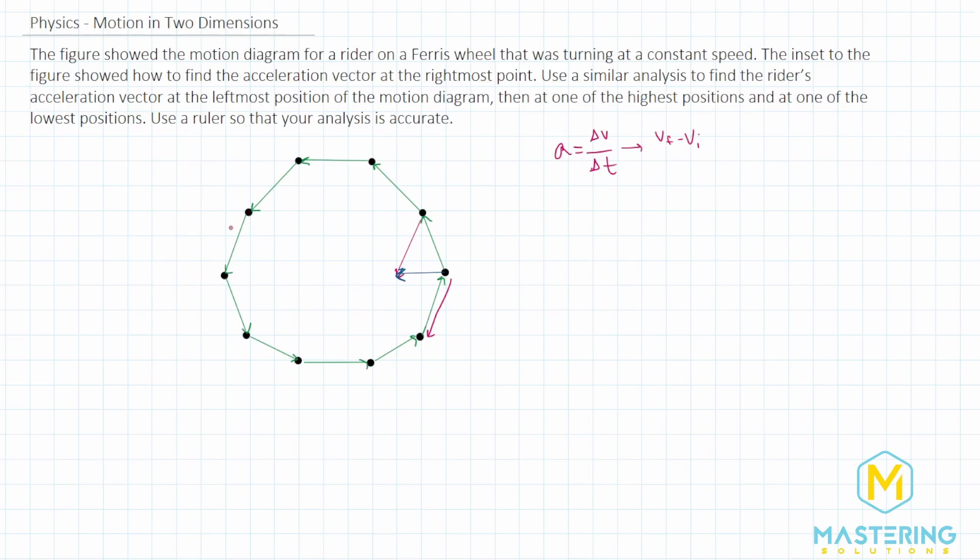So this is the initial velocity, this is the final velocity. So we'll take the initial and turn it backwards. And then we'll move it to the tip of this one right here, the final, and then we'll draw the exact same as it is right here. So we just slid it over. And now we'll draw the resultant vector, which you can see, of course, is going towards the center.